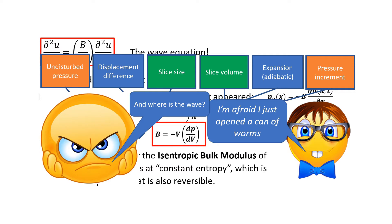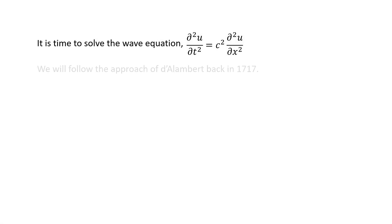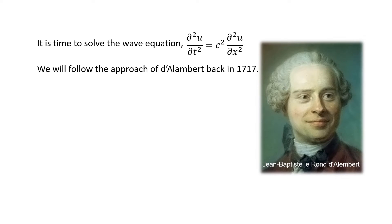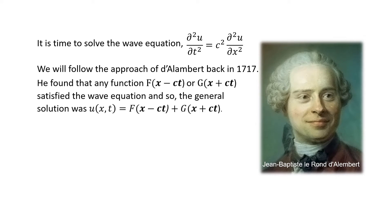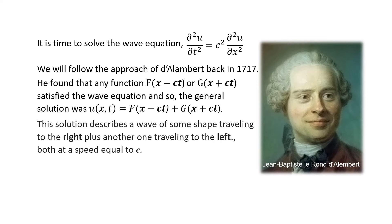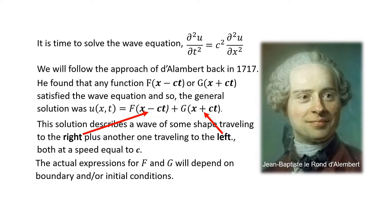Here at last is the long-awaited answer: time to solve the wave equation. Following D'Alembert's approach from 1747, any function f(x − ct) or g(x + ct) satisfies the wave equation — you can verify this easily. The general solution is u(x,t) equal to the sum of both. This describes a wave of some shape traveling to the right plus another traveling to the left, both at speed c. The actual expressions for f and g depend on boundary and/or initial conditions.